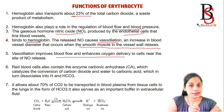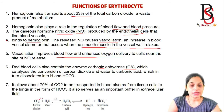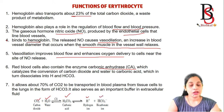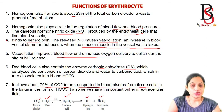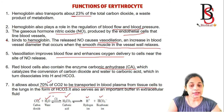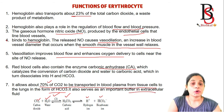Vasodilation improves blood flow and enhances oxygen delivery to cells near the site of nitric oxide release. Red blood cells also contain the enzyme carbonic anhydrase, which catalyzes the conversion of carbon dioxide and water to form carbonic acid, which dissociates into hydrogen ions and bicarbonate ions. This allows about 70% of carbon dioxide to be transported in blood plasma from tissue cells to the lungs as bicarbonate ions, also serving as an important buffer in extracellular fluids.